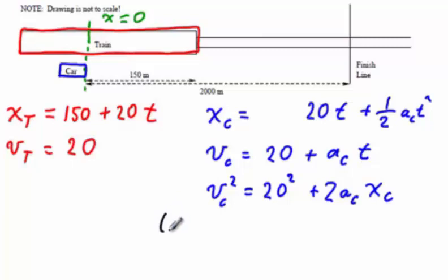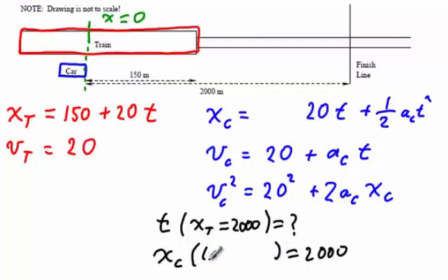We do so as a double proposition. Firstly, we need to find out when the train reaches the finish line. This is the question when, but it is not a well-formed question. We need to ask, when does x of the train equal 2,000? What we require is that the car reaches the finish line at the same moment. So for that reason, we require that x of the car is equal to 2,000 under the condition that the time is equal to the answer to the previous calculation.